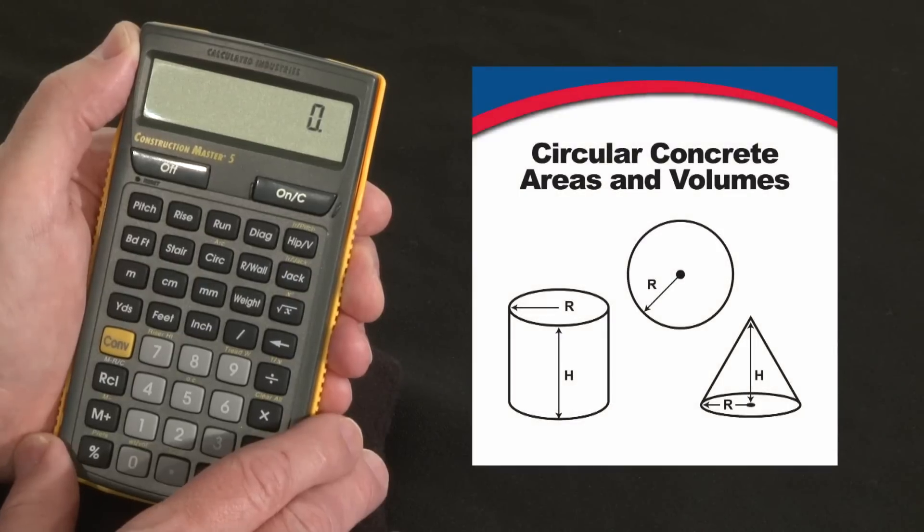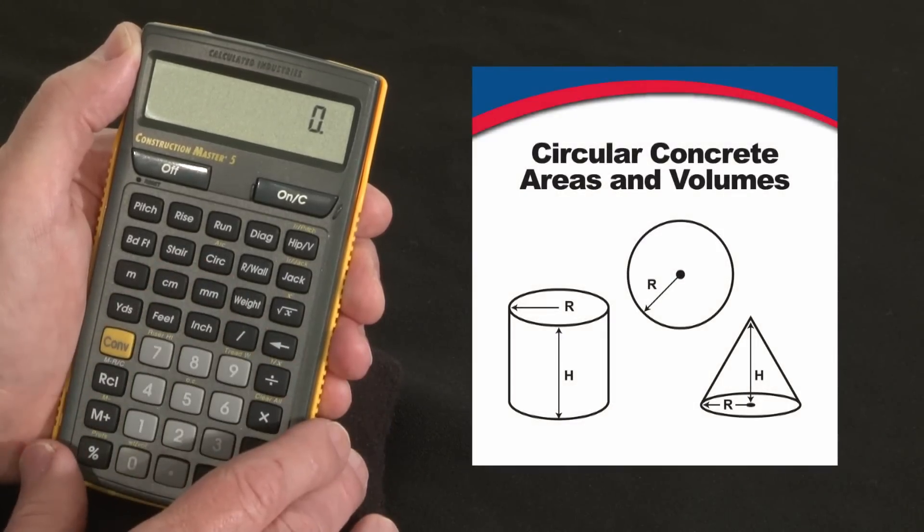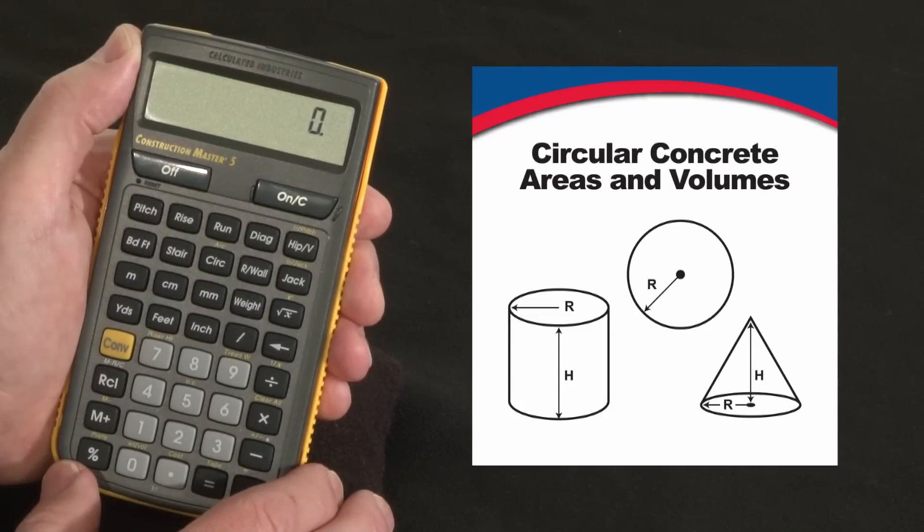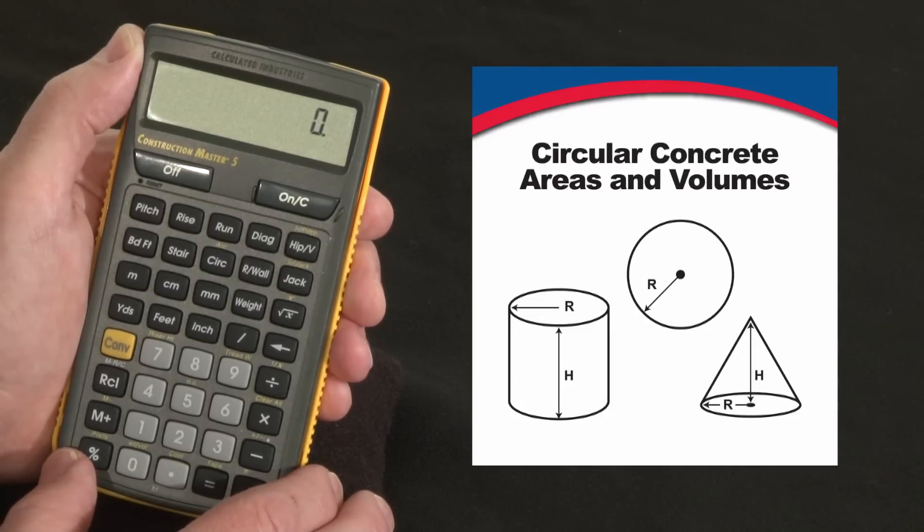Now let me show you how you can use your Construction Master 5 circle function to calculate circular concrete areas and volumes. It's great for things like columns, silo pads, post holes, sonotubes, or anything round.